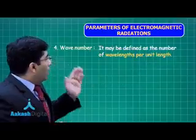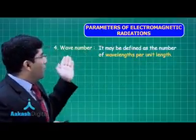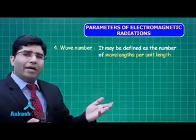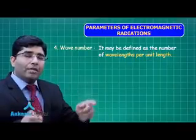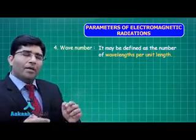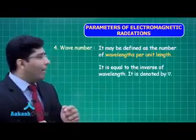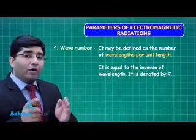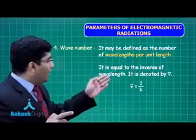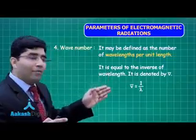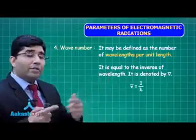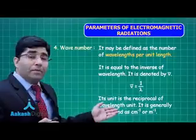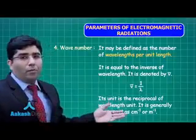The next parameter is wave number. Wave number is defined as the number of wavelengths per unit length. It is denoted by nu bar, and it is found by taking the reciprocal of wavelength. Since it is the reciprocal of wavelength, its unit is per centimeter or per meter.